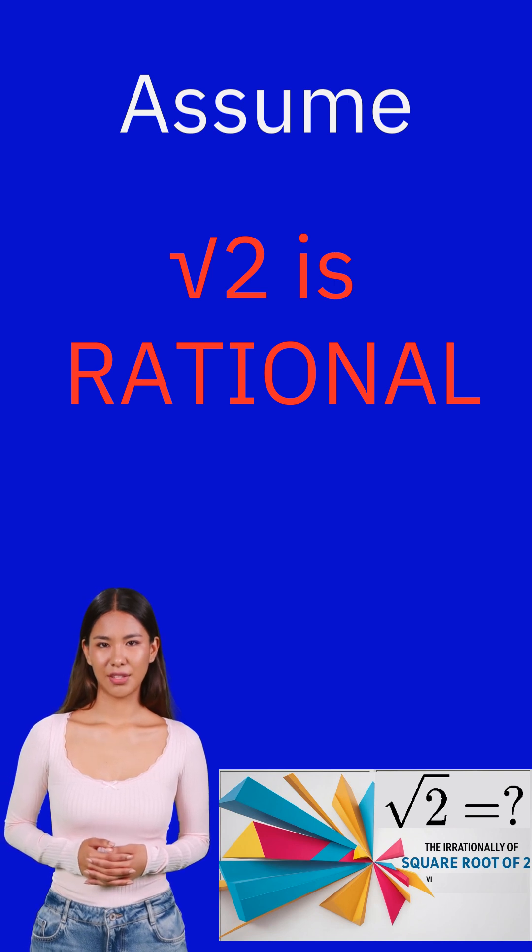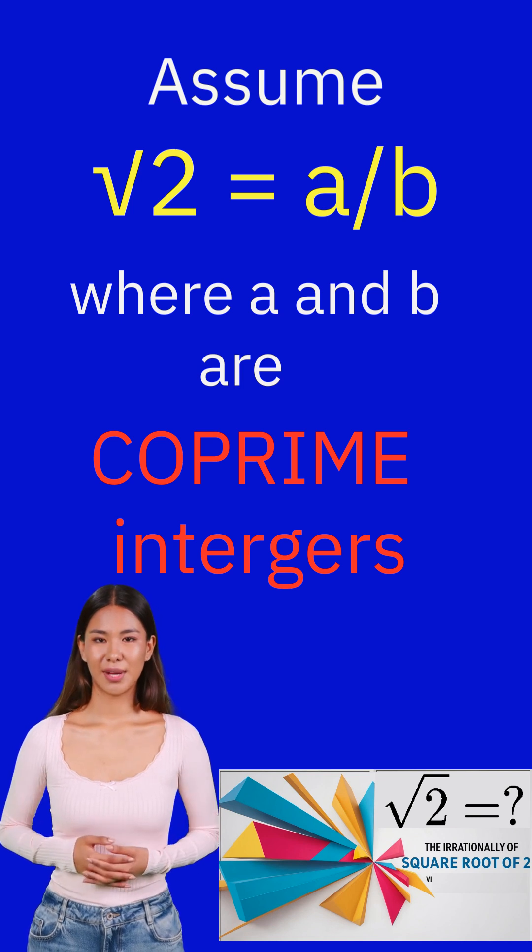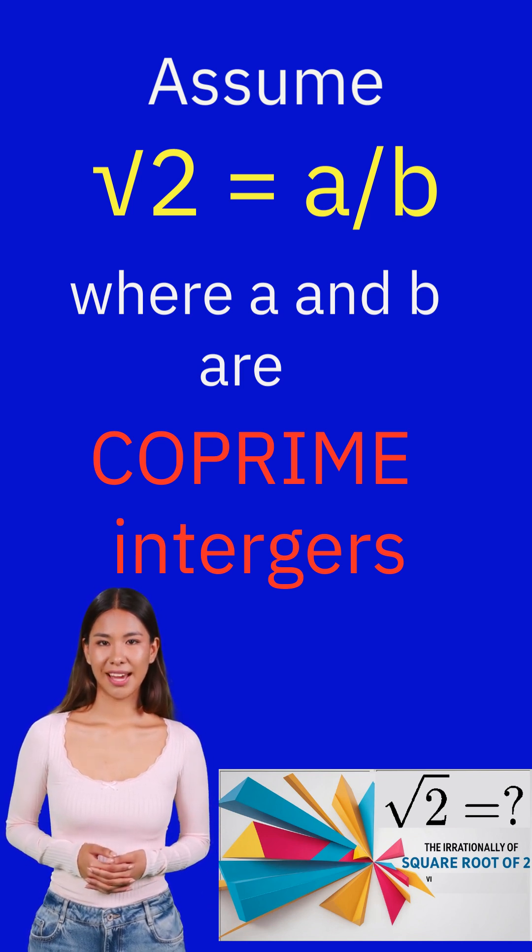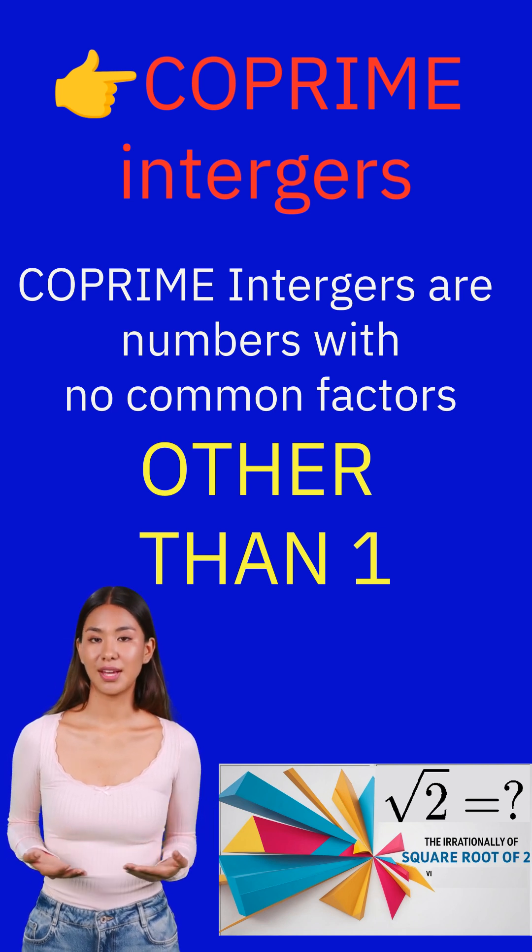Let us assume that √2 is a rational number. We assume that √2 equals an integer a divided by another integer b, where a and b are coprime. Coprime integers are numbers with no common factors other than 1.